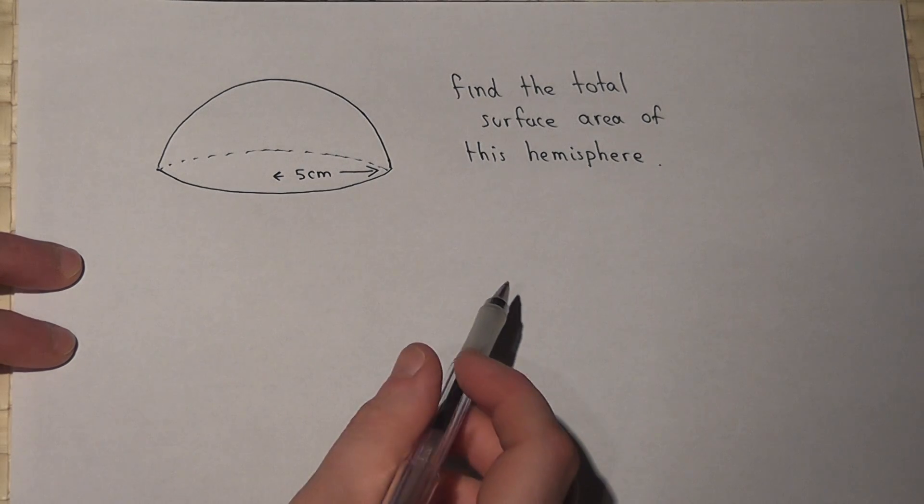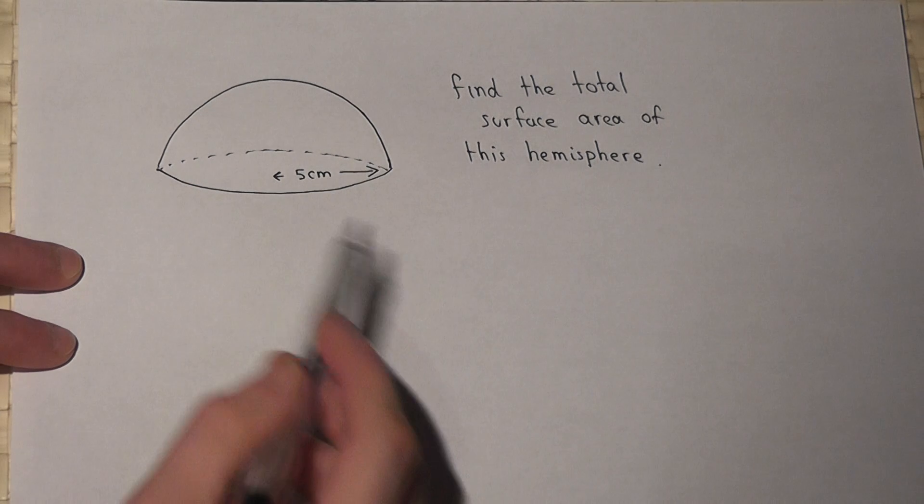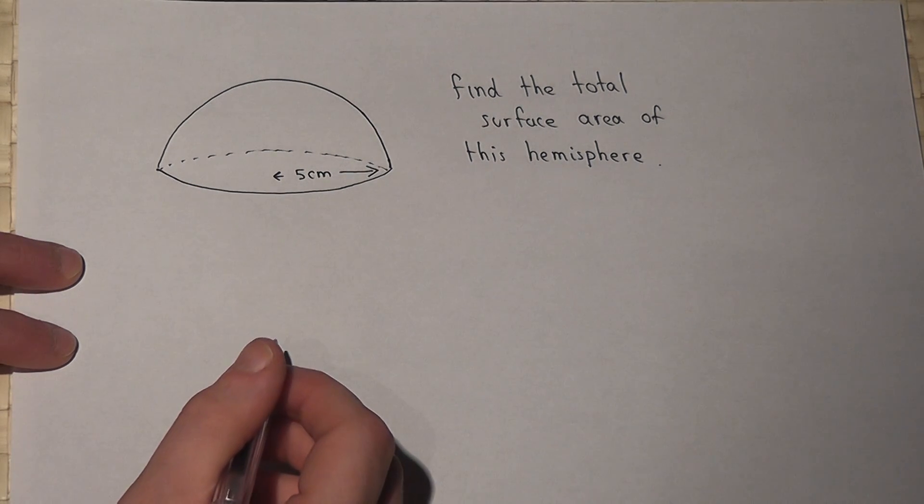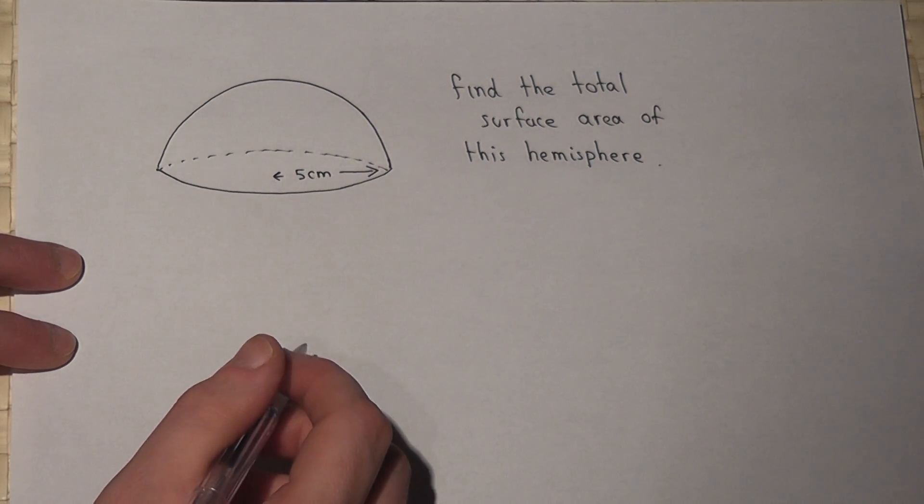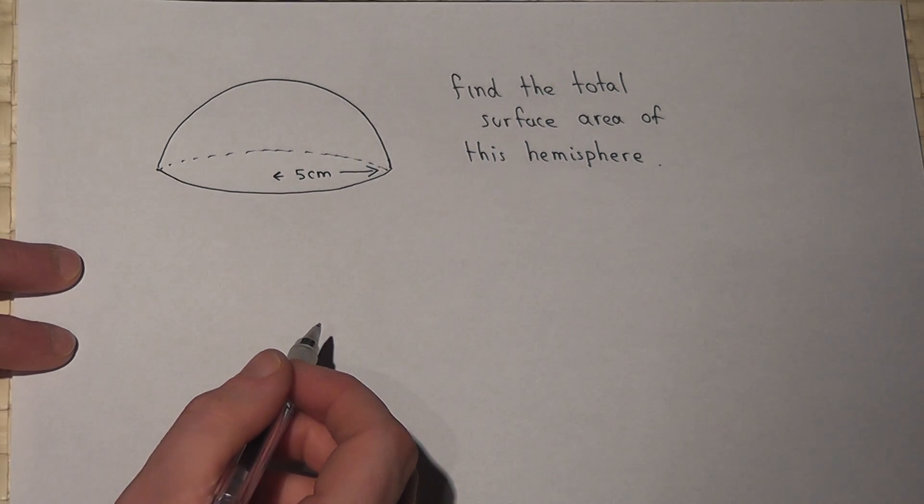This video talks through how to find the surface area of a hemisphere, and a hemisphere is half of a sphere. We will leave our answer in terms of pi.